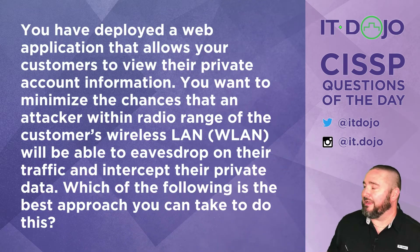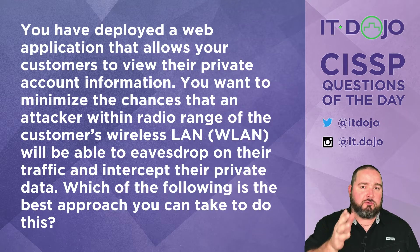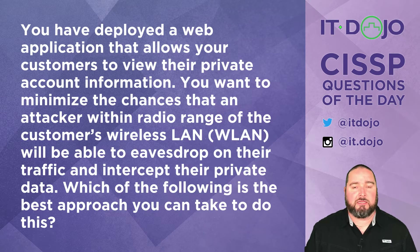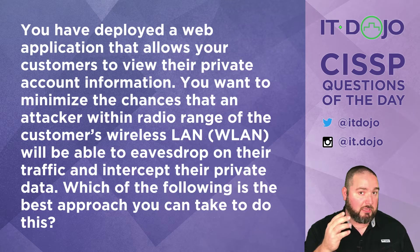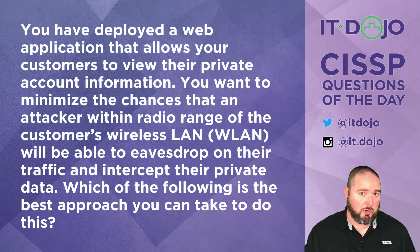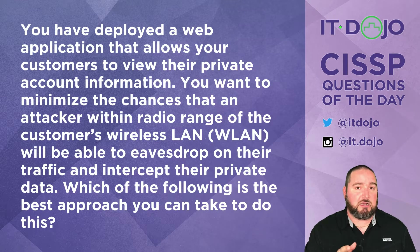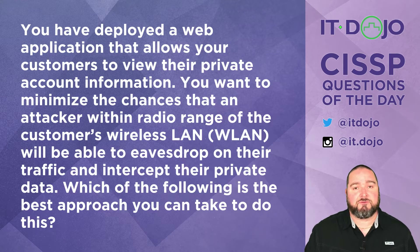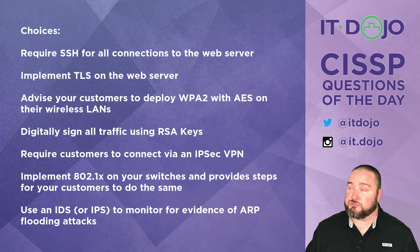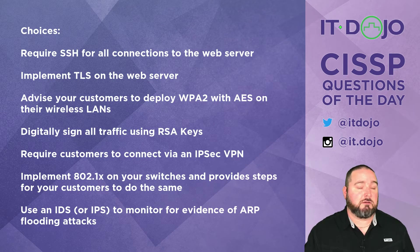First question today: you have a web app that allows customers to connect to your server and view their private information. You want to make sure that somebody who's within radio range of their wireless access point — at their home or at their office — is unable to view that private information. Which of the following should you do? Go ahead and click pause, and when you're ready, click play and we'll break each one down.